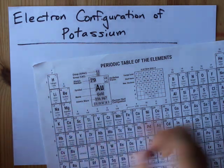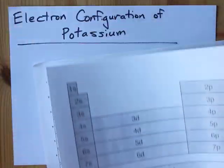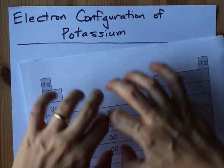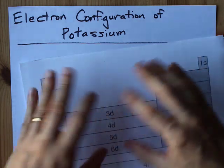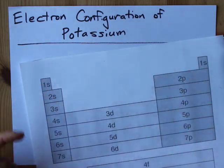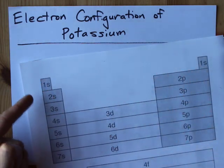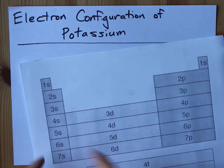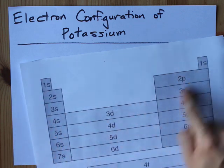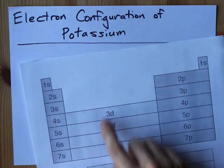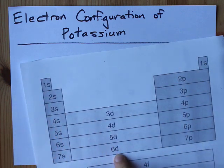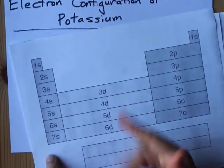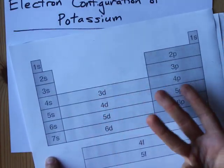The reason I'm pointing out where it is is because when I'm doing electron configurations, I have this chart in my mind. It's easy to remember: 1, 2, 3, 4, 5. S's are in this block. This is the P block. The D block is here, and those are just one behind. There's an F block as well.